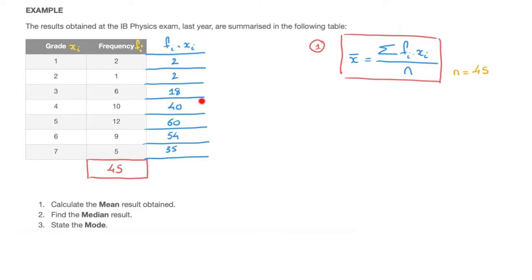Now I need to calculate the sum of all these values. I'll write the result at the bottom of the column. By all means check, but 2 plus 2 plus 18 plus 40 plus 60 plus 54 plus 35 equals 211. And 211 is exactly what goes on the numerator. So the mean equals 211 over 45. With my calculator and rounding to three significant figures, the mean result equals 4.69.